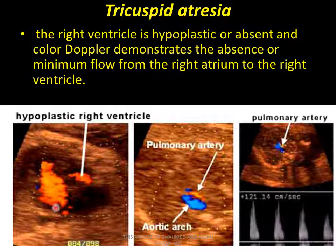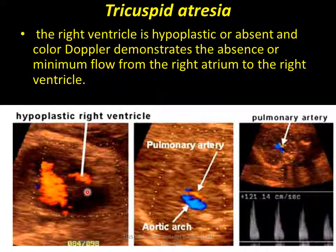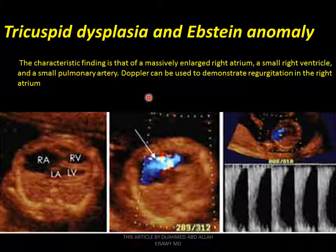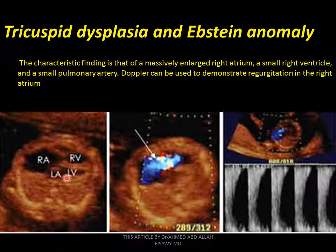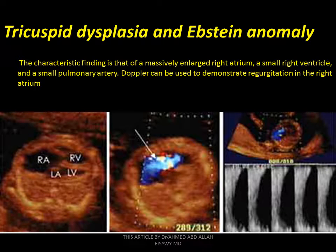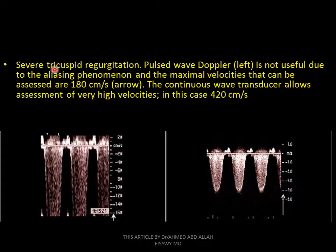Tricuspid atresia: right ventricle hypoplastic or absent. Color duplex demonstrates absence of flow from right atrium to right ventricle. Pulmonary artery with pulmonary artery hypoplasia, pulmonary valve — with both pulsed and duplex study showing high systolic velocity. Tricuspid atresia, tricuspid dysplasia with Ebstein anomaly: characterized by massively large right atrium, small right ventricle, and small pulmonary artery. Doppler shows high duplex study and high spectral velocities across pulmonary valves.